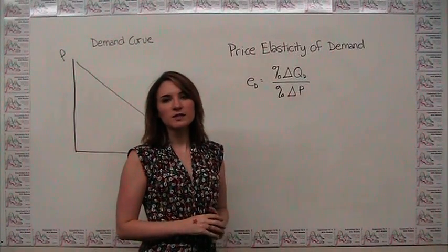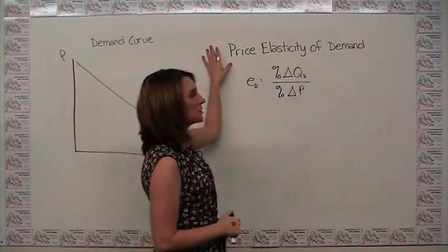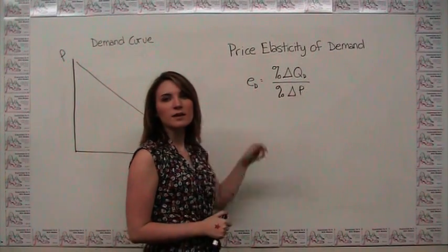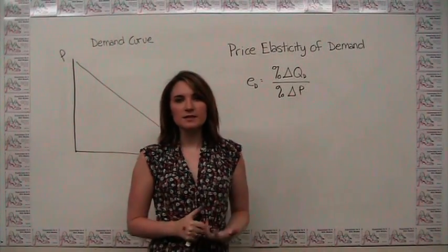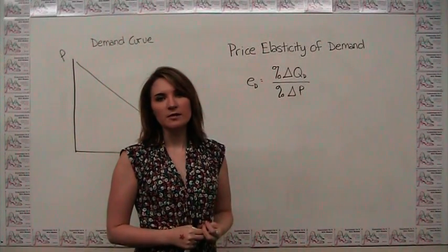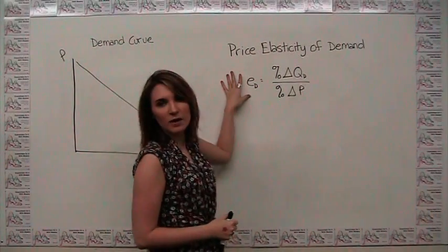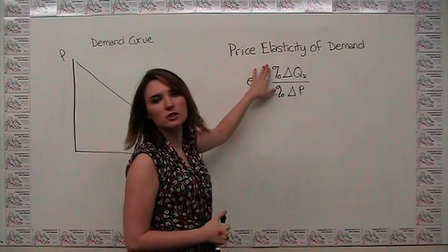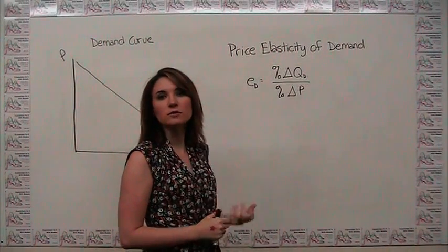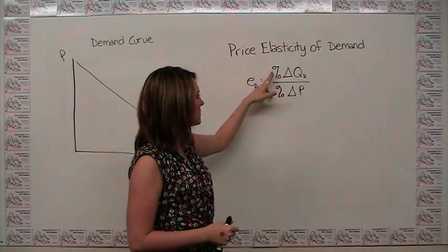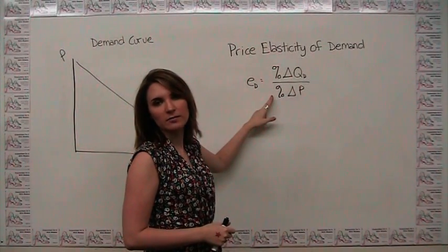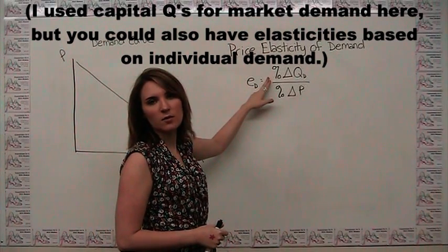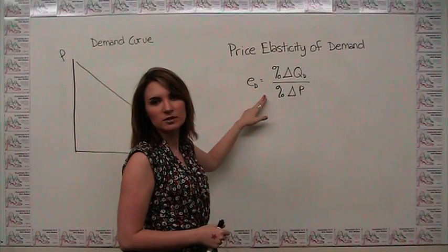To quantify responsiveness of quantity demanded to price, we use what's called price elasticity of demand. We'll come back and talk about other types of elasticities, but we'll focus on this one for now. The price elasticity of demand is represented not by the absolute change in quantity demanded divided by the absolute change in price, but in terms of the relative change — or mathematically, just percent change in quantity divided by percent change in price.